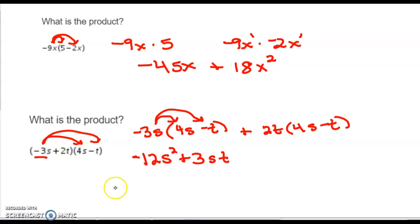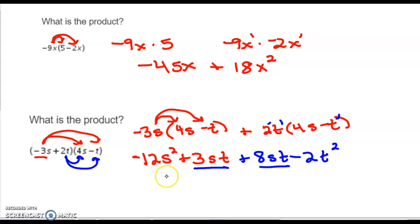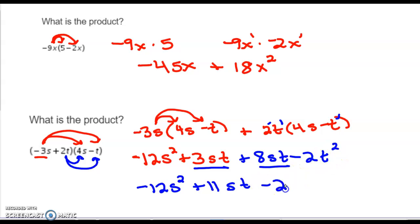Now take the 2t and distribute that to both terms in the second set of parentheses. So 2t times 4s: 2 times 4 is 8, with letters s and t — put them in alphabetical order, so st. Then 2t times negative t: 2 times the understood negative 1 is negative 2, and t times t gives t squared. Now we have four terms; two of them can be combined — 3st and 8st have the same variable. Combining them: 3 and 8 gives 11st, so the answer is negative 12s² plus 11st minus 2t².